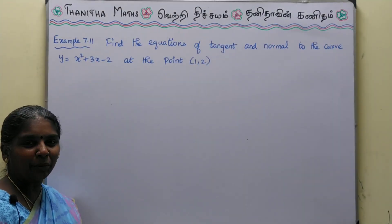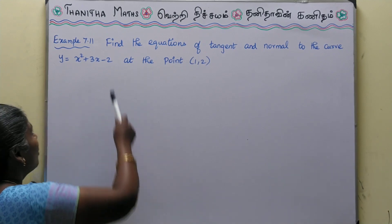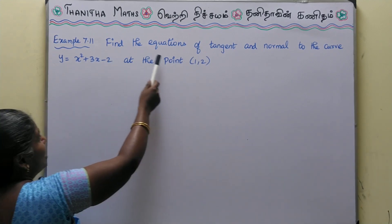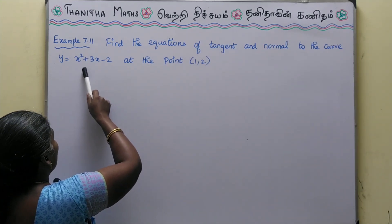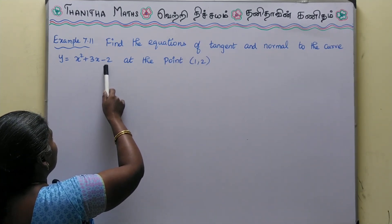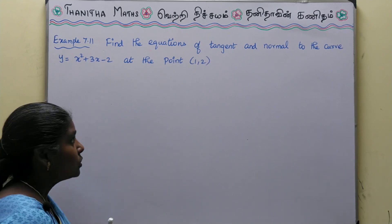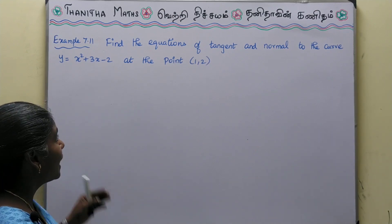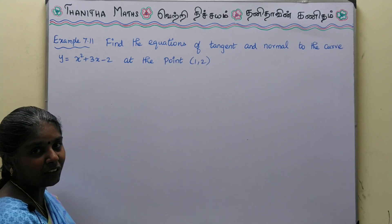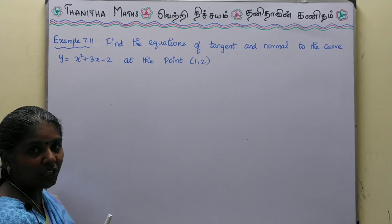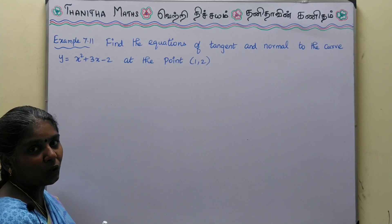Students, I am going to talk about example 7.11. Find the equations of tangent and normal to the curve y = x² + 3x - 2 at the point (1, 2). The equation of the curve is given and we need to find the tangent at point (1, 2).